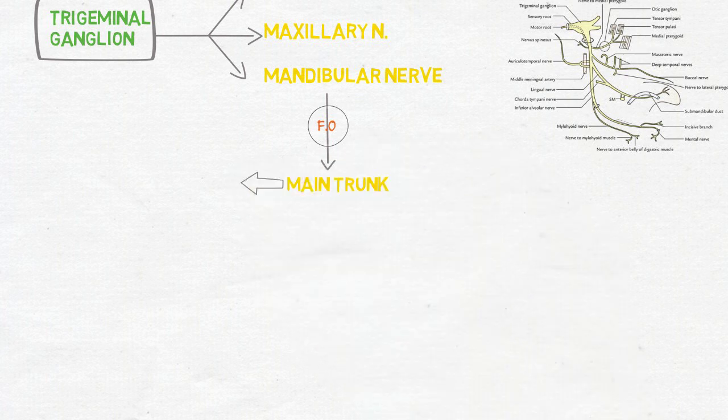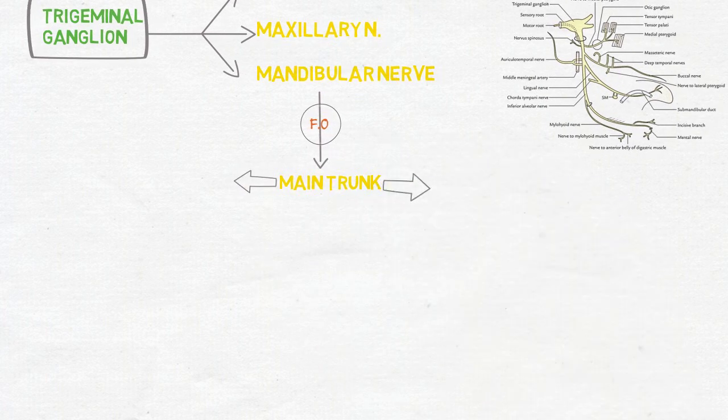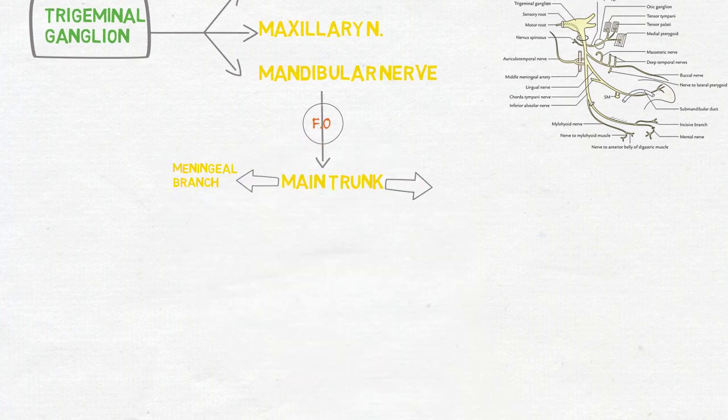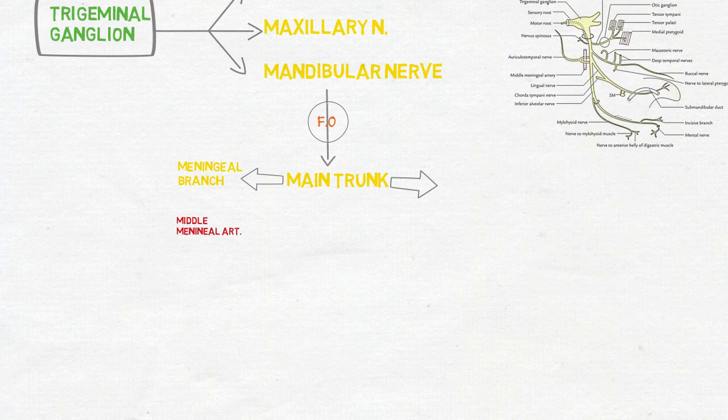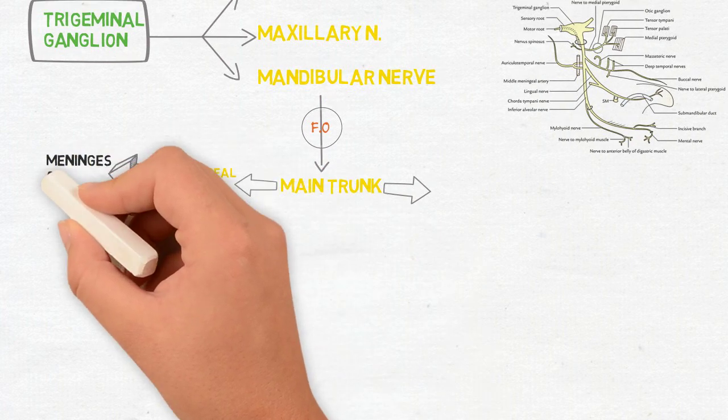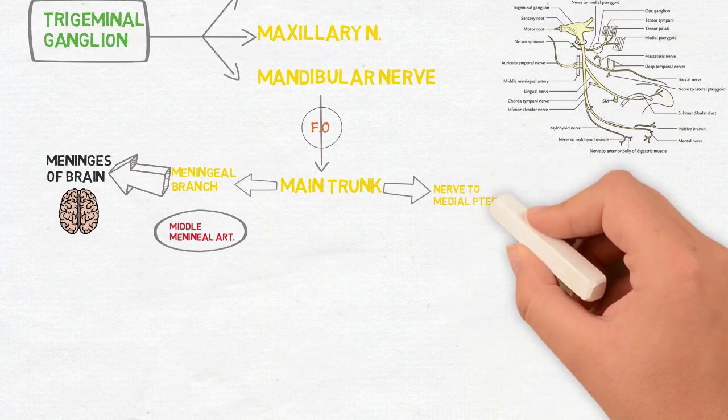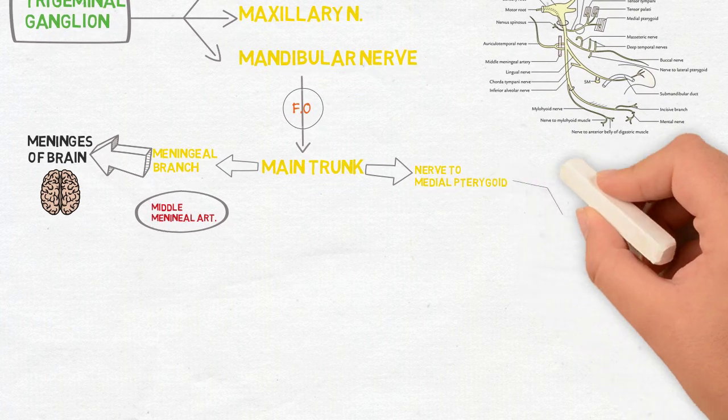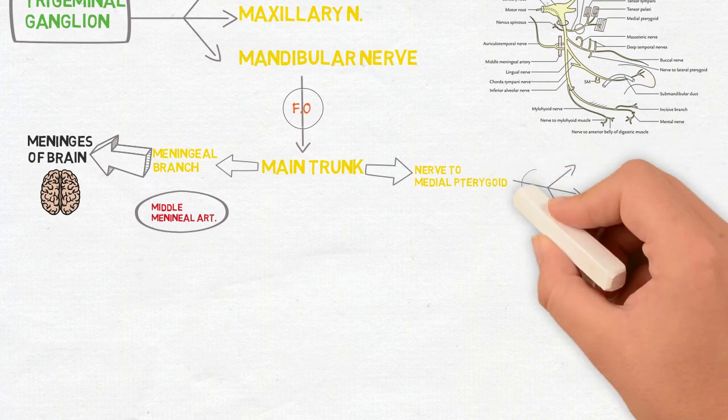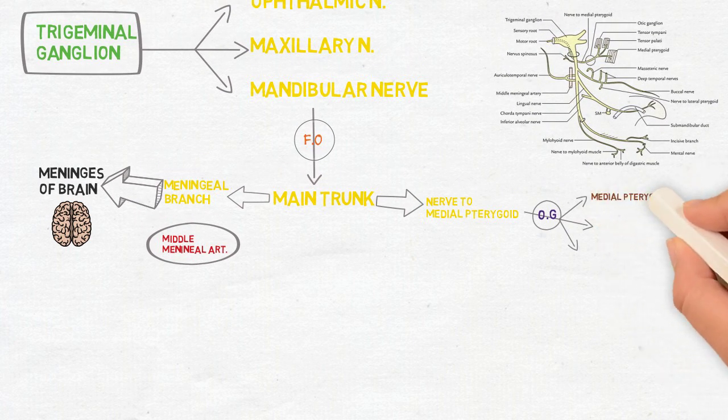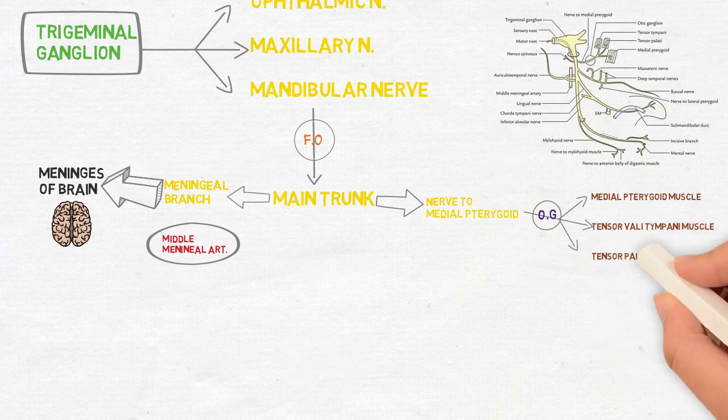The main trunk gives out mainly two branches. The first one is the meningeal branch or the nervus spinosum which goes along with the middle meningeal artery to supply the meninges of brain. The next branch from the main trunk is the nerve to medial pterygoid. This passes through the otic ganglion to supply three muscles: the medial pterygoid muscle, tensor veli palatini, and the tensor tympani.